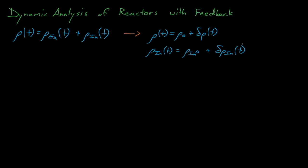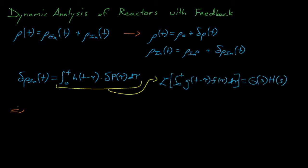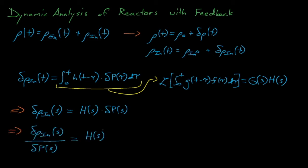As we discussed initially in chapter 10, reactor feedback generally depends on the amount of energy released from the fuel, and thus the internal reactivity is equal to the integral of the power released over time weighted by some function h. This expression is actually a convolution of the power and feedback function, and if we take the Laplace transform of a convolution, we see that it equals the Laplace transform of h times the Laplace transform of the delta power term.